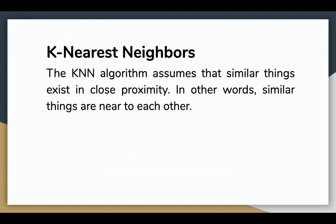The KNN algorithm assumes that similar things exist in close proximity. In other words, similar things are near to each other. We can relate this definition to something like birds of a feather flock together.